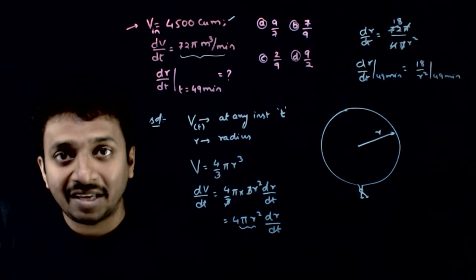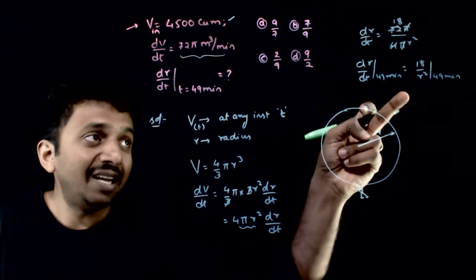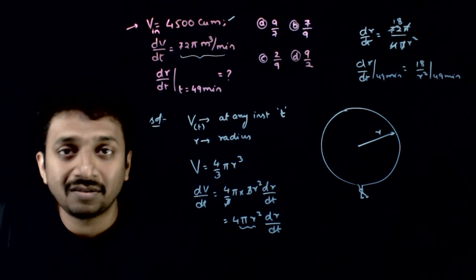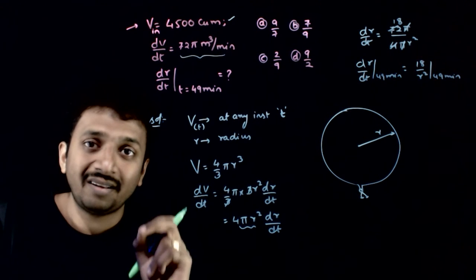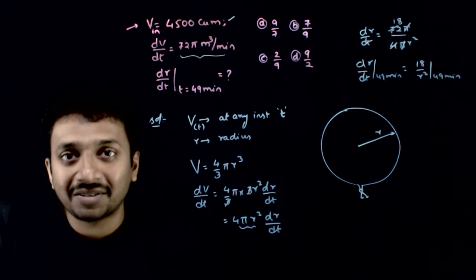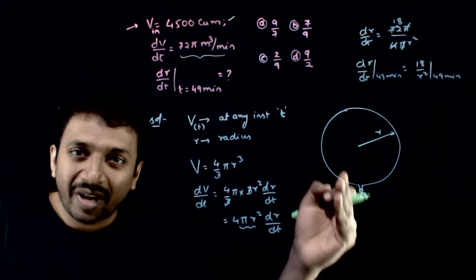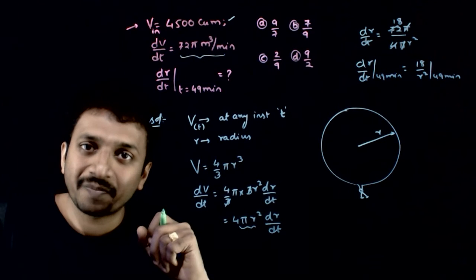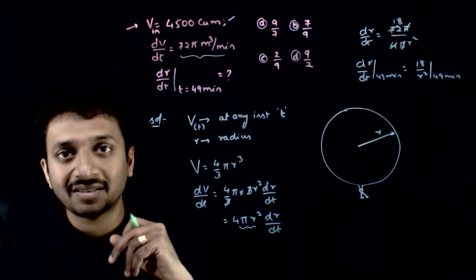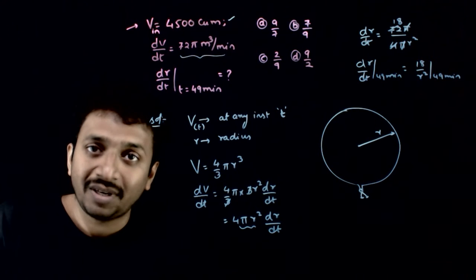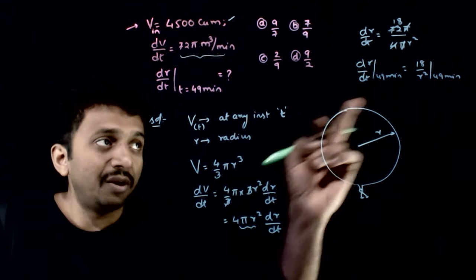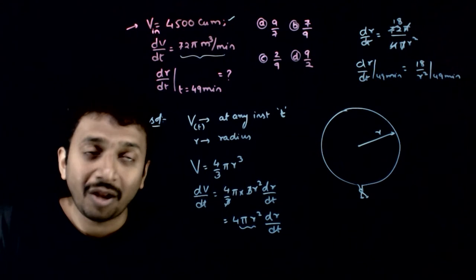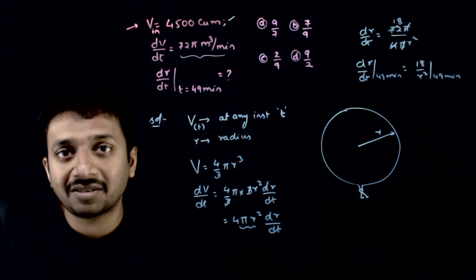Now my question has changed. To solve this question, I need to find the radius at 49 minutes. What is the radius at the instant 49 minutes? Obviously gas would have been leaking out for 49 minutes, so the radius changes. How do I find the radius at t = 49? If I know the volume, I can find the radius. Can I find the volume at 49 minutes?